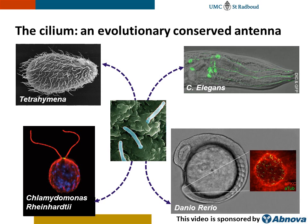Let's start with a brief introduction on cilia. Cilia are evolutionary conserved organelles which are present as antennas on the cell membrane of several different species, as shown here. Cilia can regulate fluid movements by beating in an orchestrated fashion, or they can act as sensors, transducing signals from the extracellular environment into a cellular response.